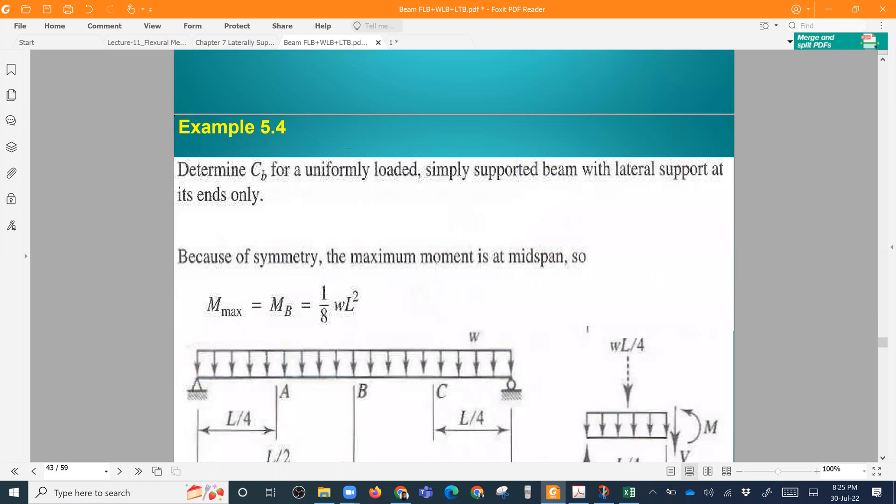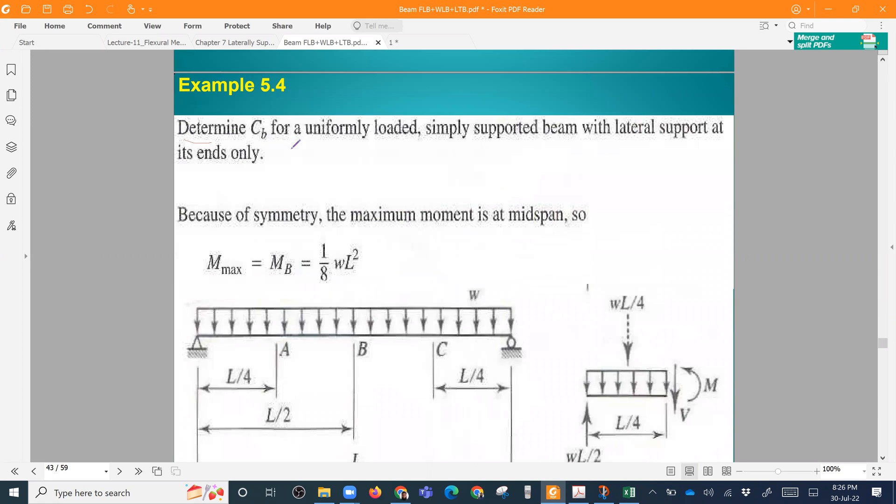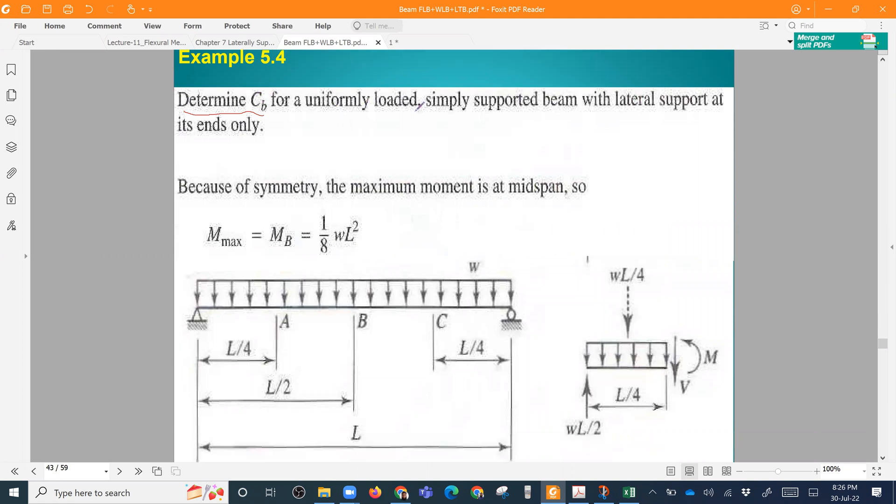This is example 5.4. Determine the CB. This is a coefficient or factor for non-uniformity of the moment for a simply supported beam with lateral support at the ends only.